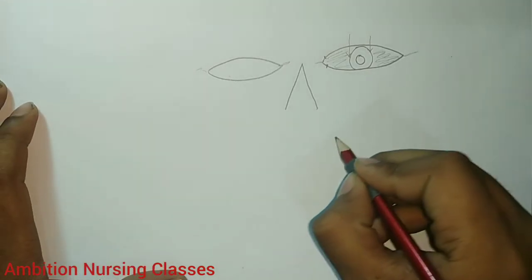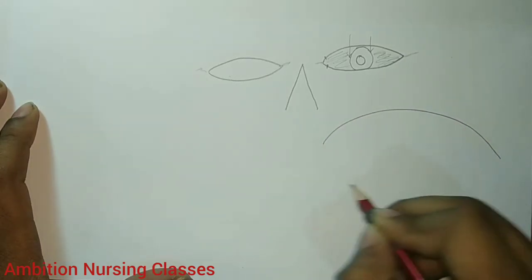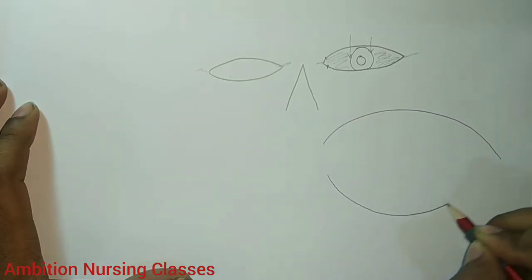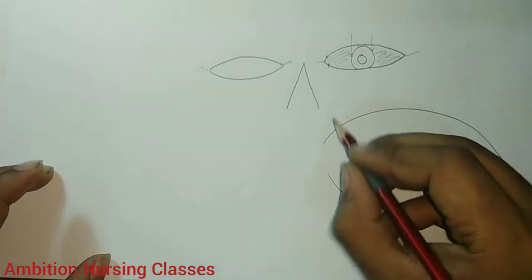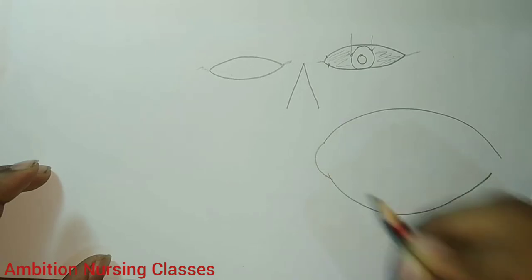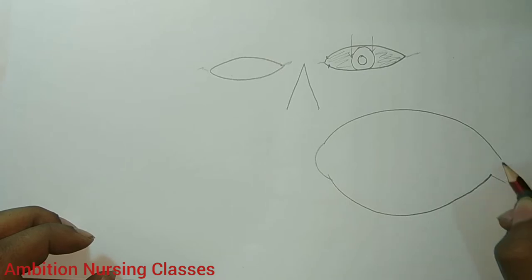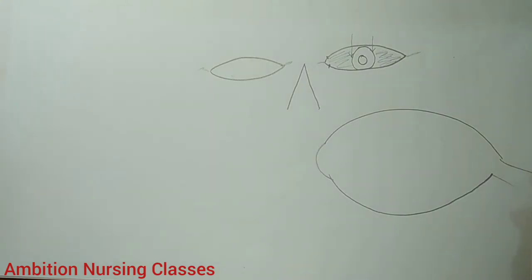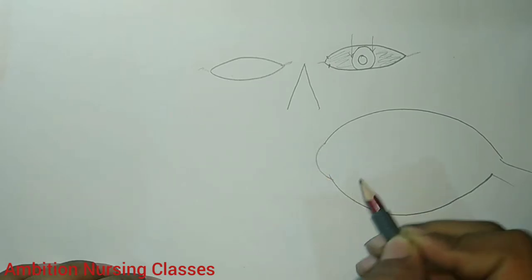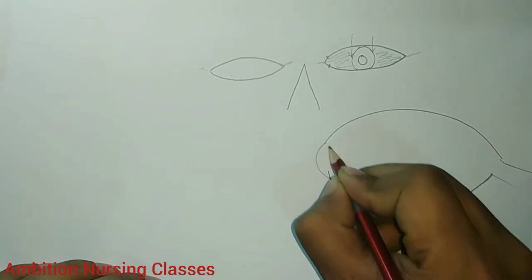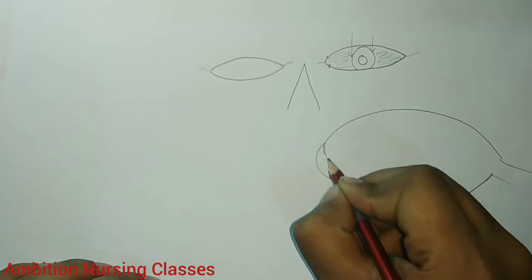Now let us try to understand the cross section of the eye. Remember there are three layers of the eye: the outer layer is known as the sclera, the inner is the vascular coat, and the third one is your retinal coat. Here is your cornea, and this structure is your iris.